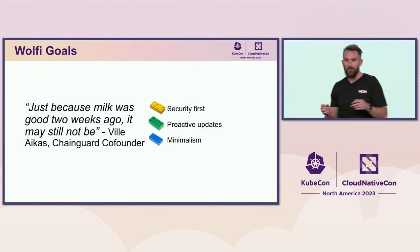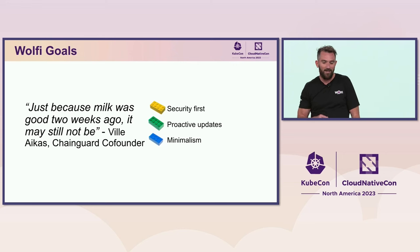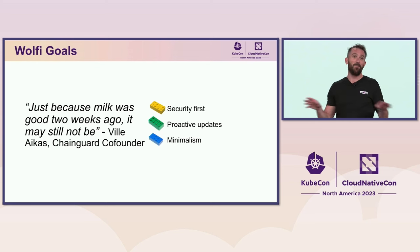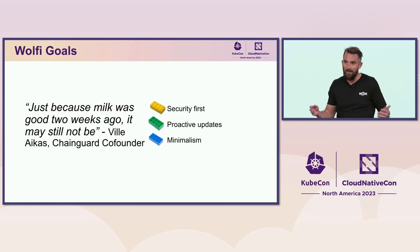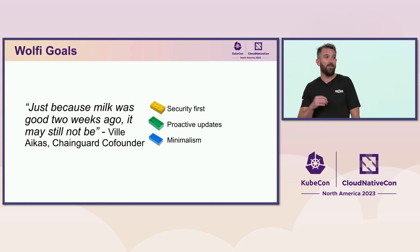There are some goals and efforts we have around Wolfi. I saw a quote from Ville, one of the co-founders at ChainGuard: 'Just because milk was good two weeks ago, it may still not be.' It totally applies to software. We have all this awesome software innovation around open source, continually creating and adding more software, which is incredible. But things can go stale. Vulnerabilities can be detected and exploited. So we need to keep on top of this. With that in mind, Wolfi is taking the approach of security first and foremost.